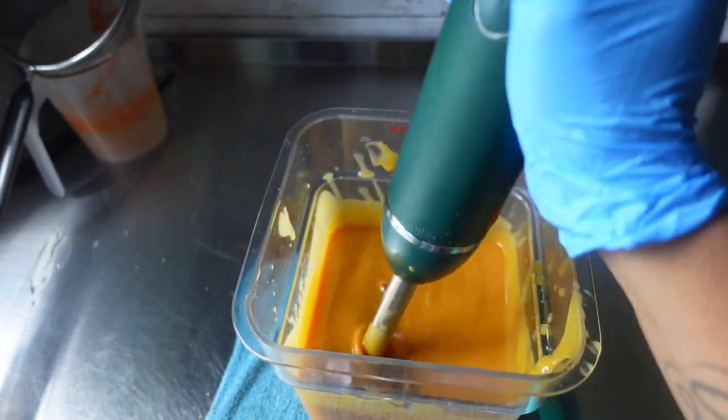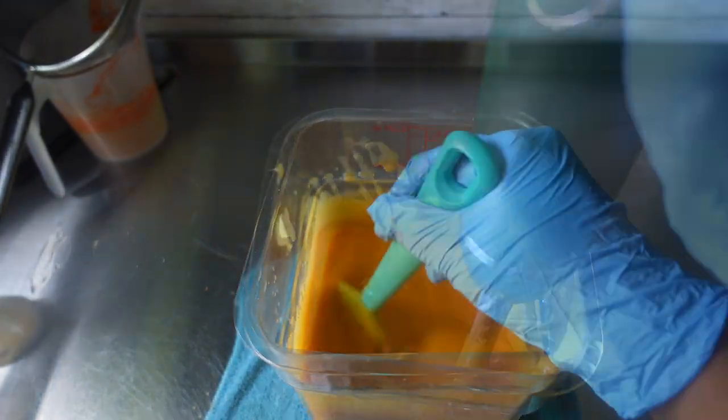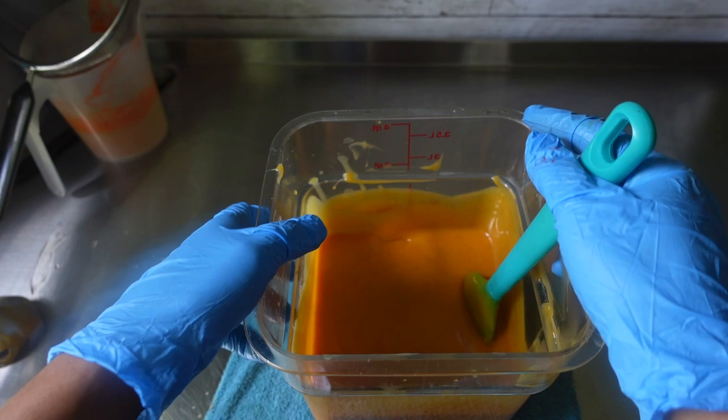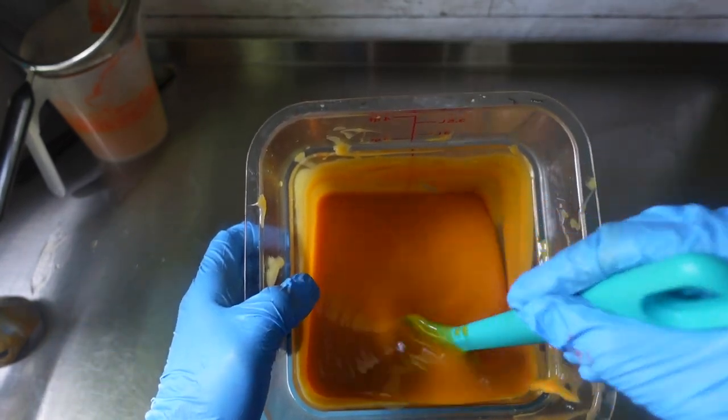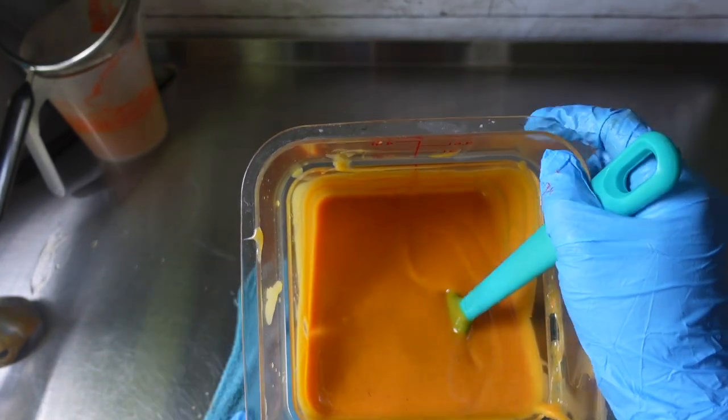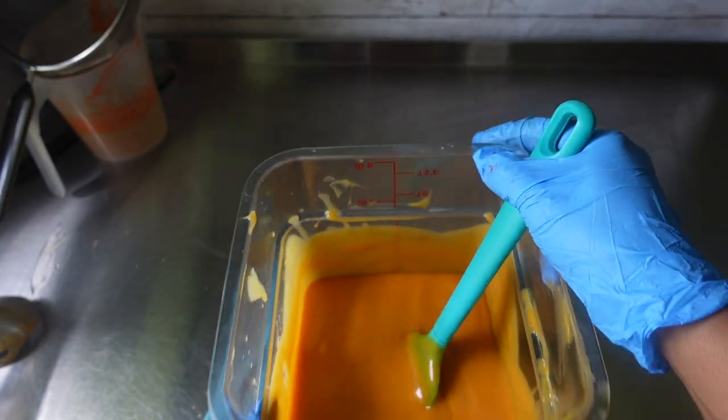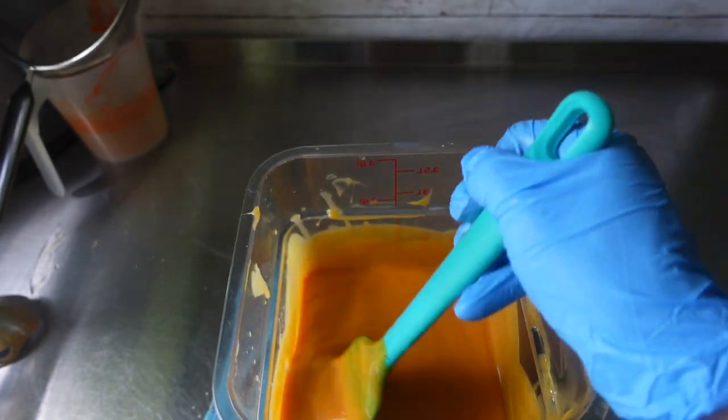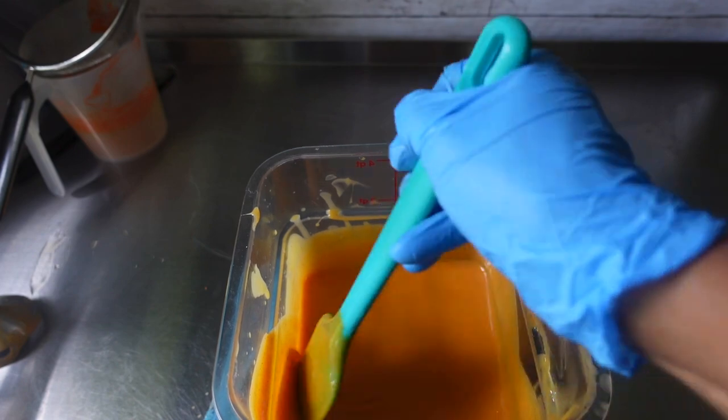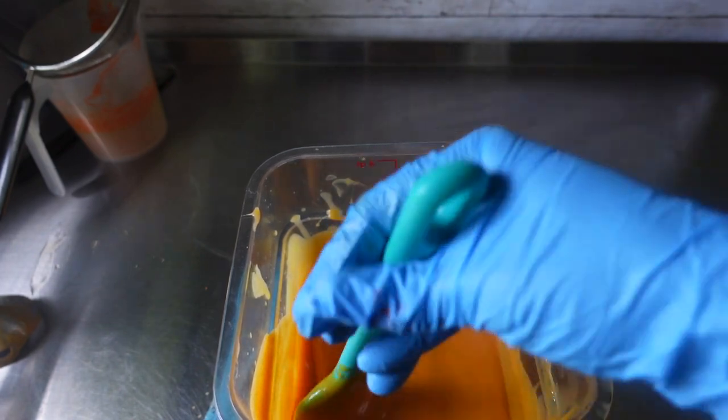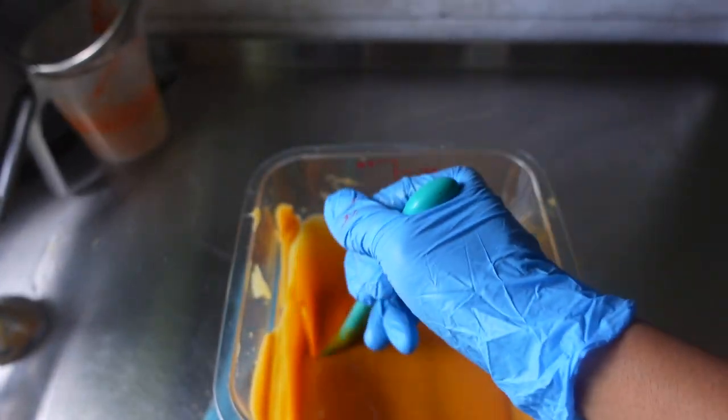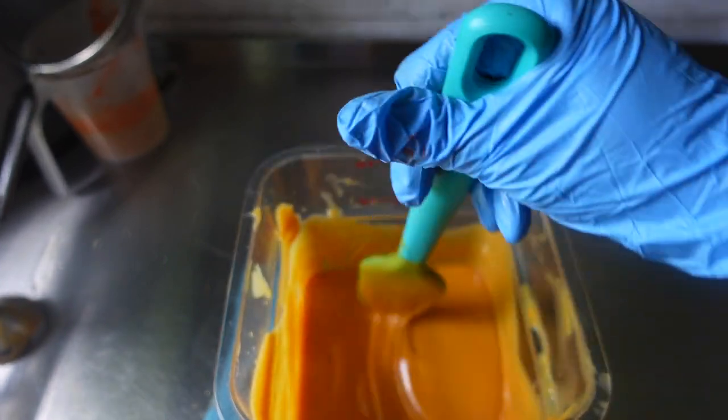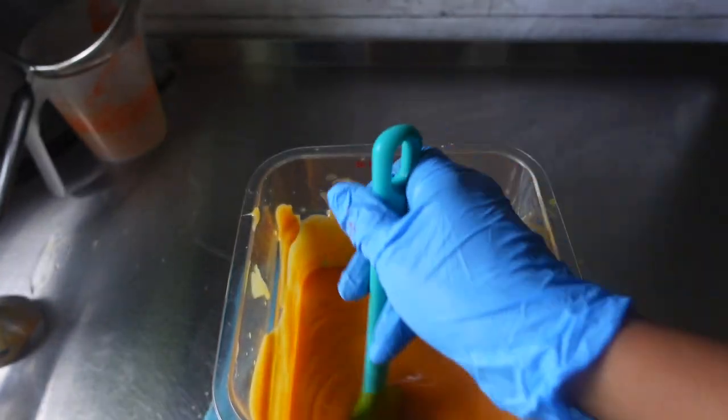All right, so once I added in my additives I just continued to stir this up and stick blend it just a little bit more until everything was blended together. And y'all look at that color, it's definitely giving like pumpkin, sweet potato, fall. But yeah, I'm definitely loving this color. So I am just right now scraping the sides and then it was time to put it in the soap mold.